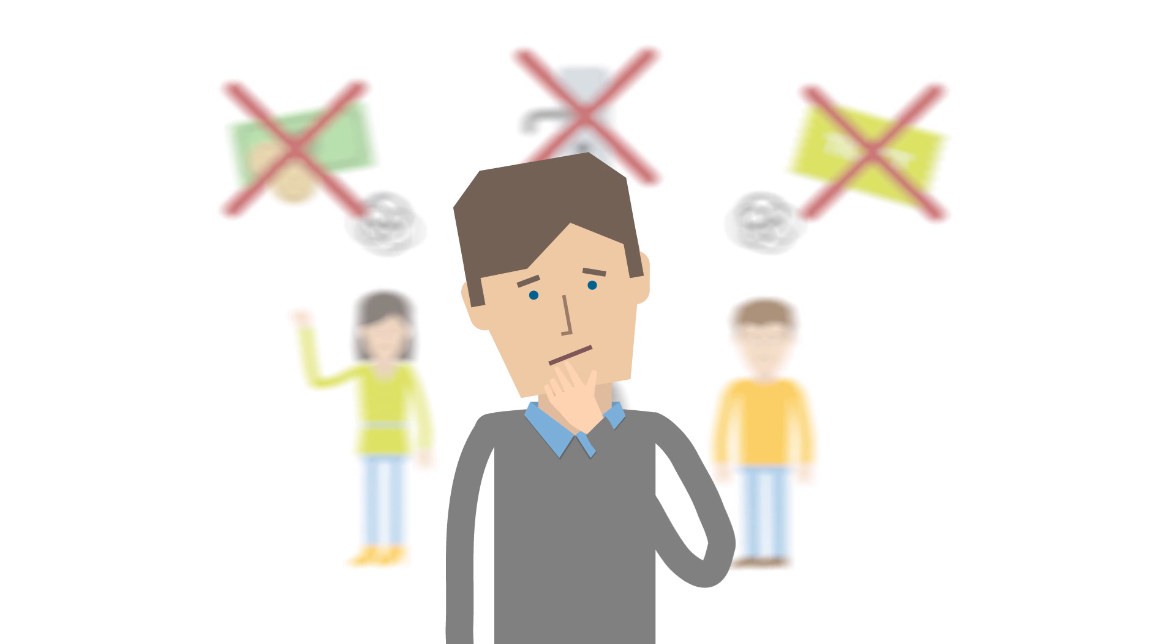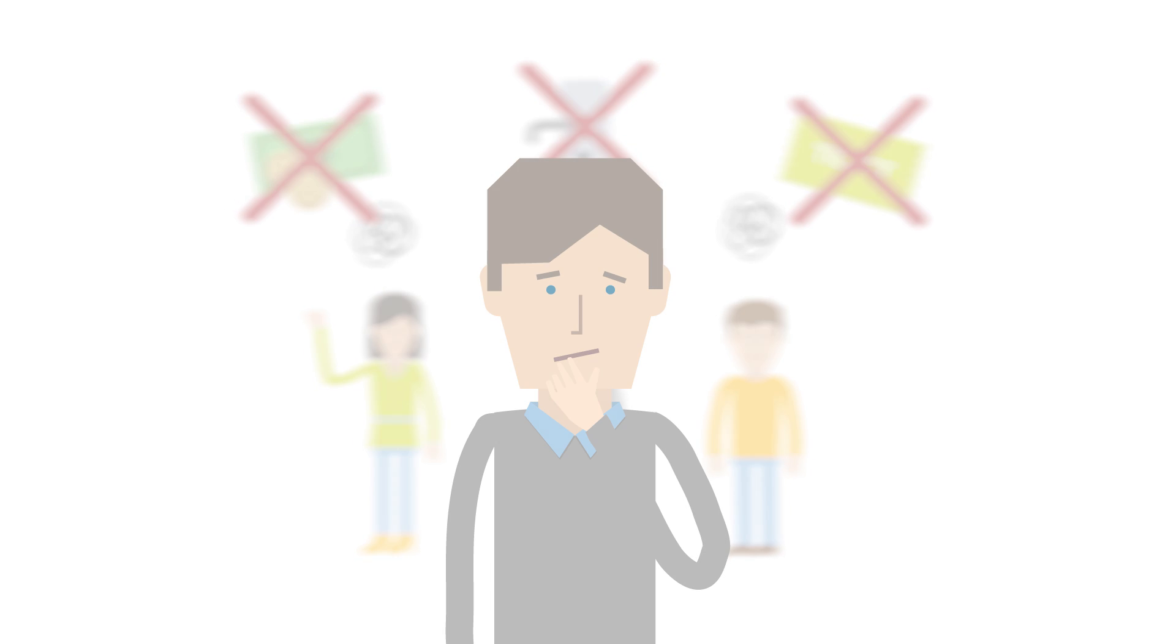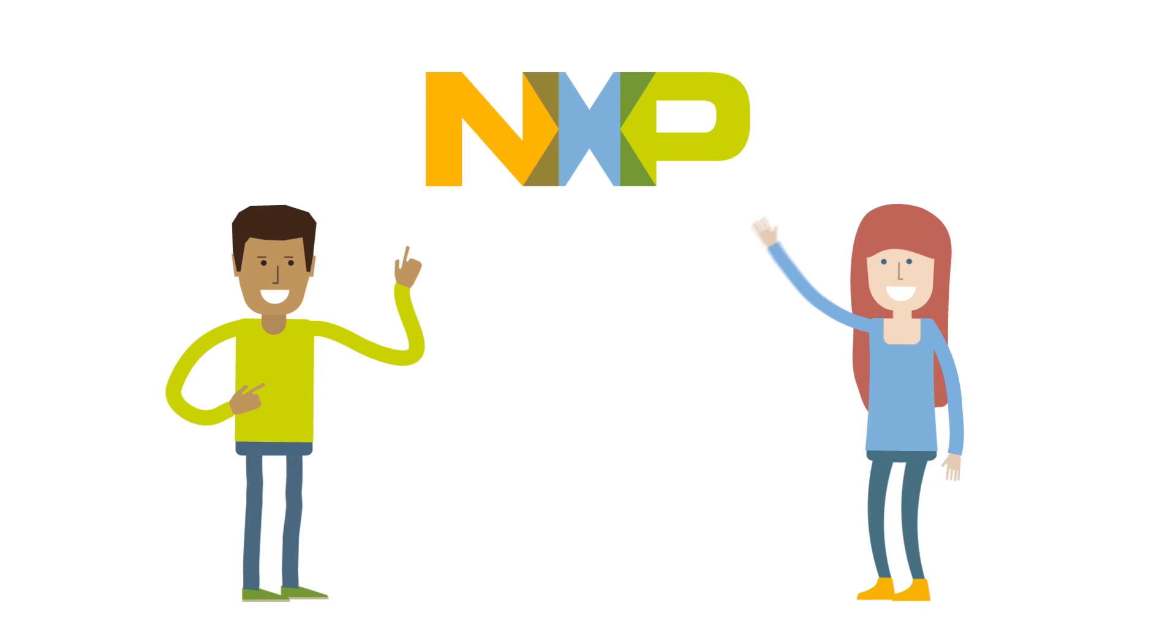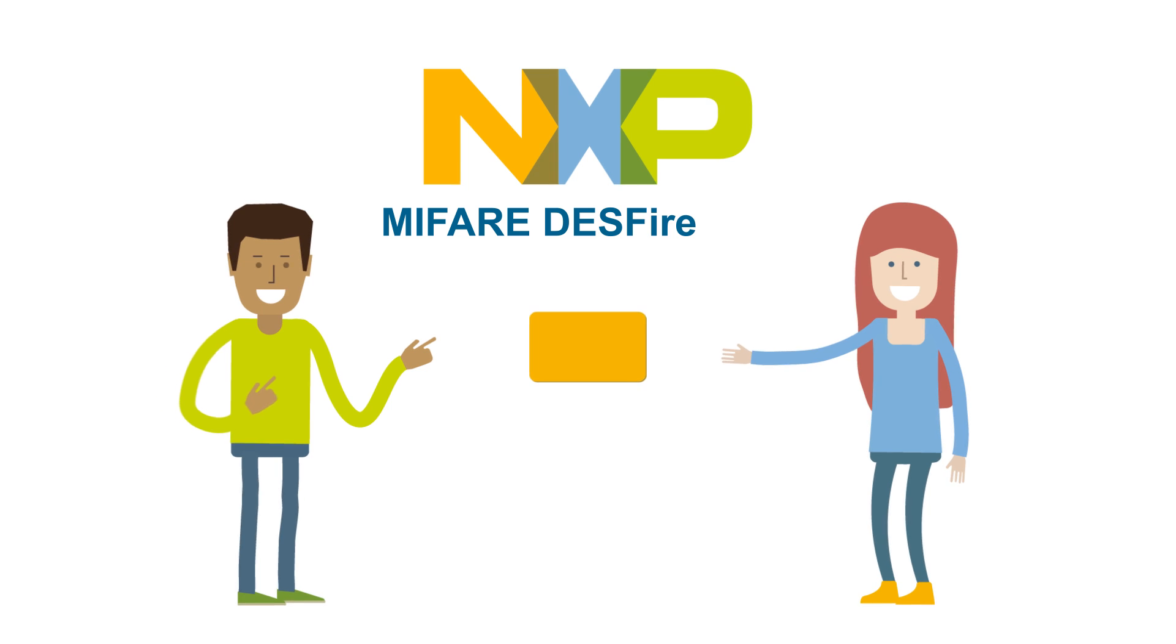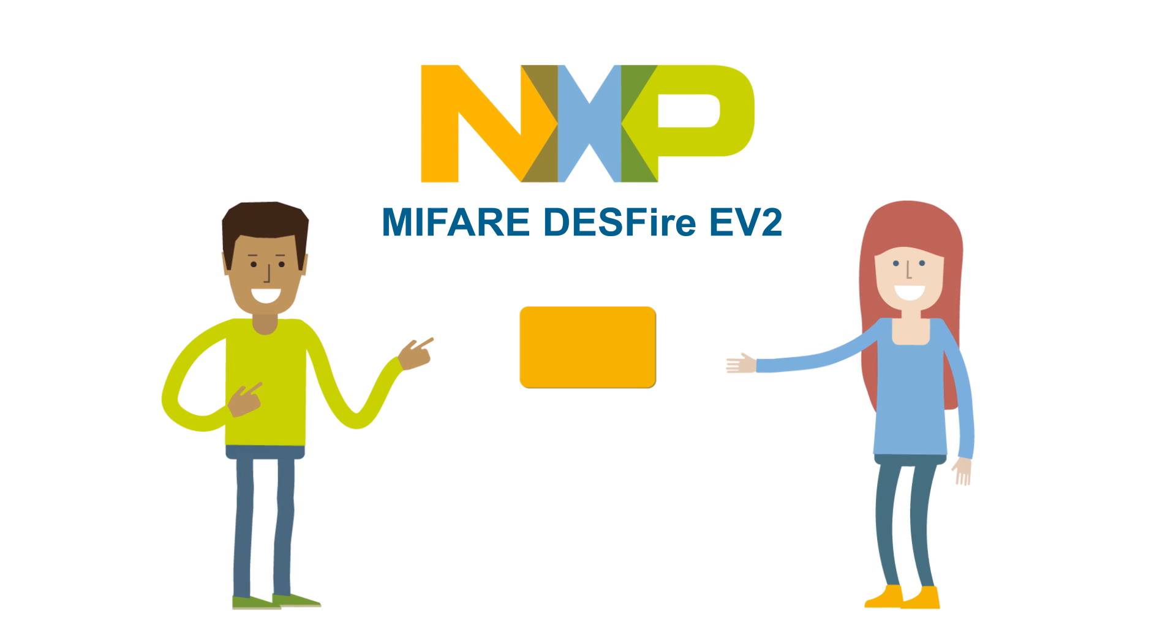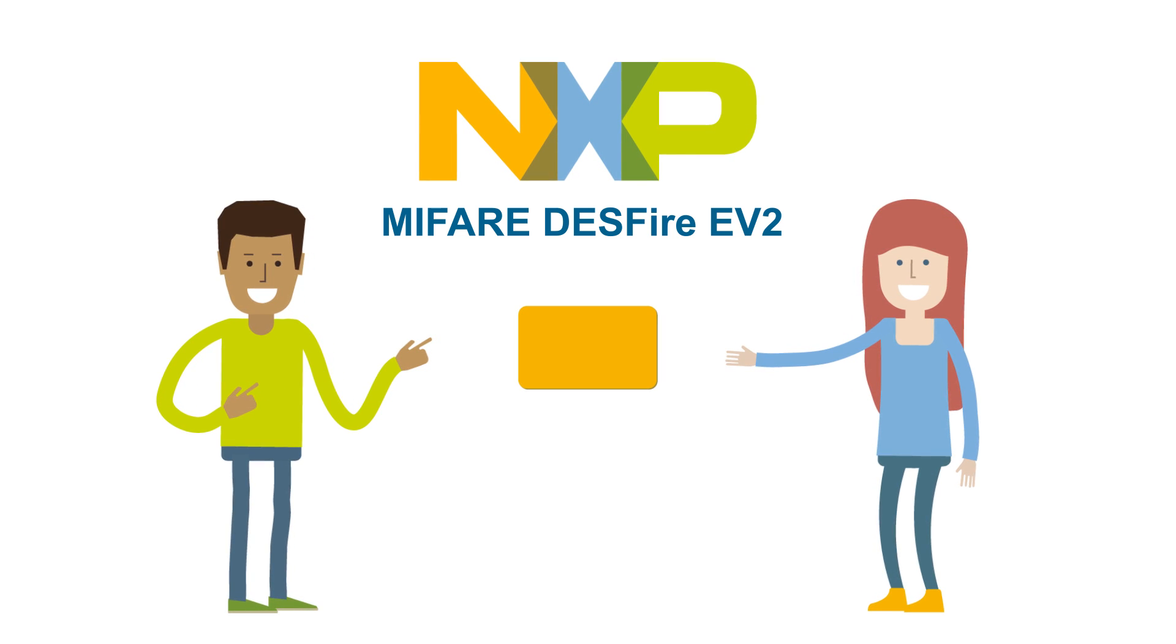Isn't there a flexible and easy to use solution? Yes there is! We at NXP have developed the MyFair Desfire Evolution 2 Smart Card IC. It comes with loads of useful features, including the My Smart App, which is like an app store on a smart card.